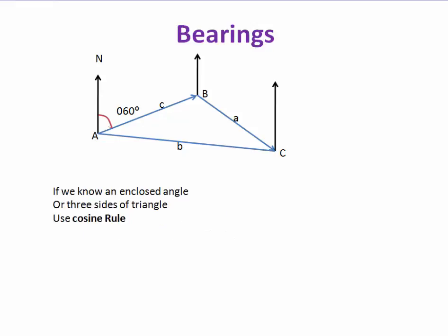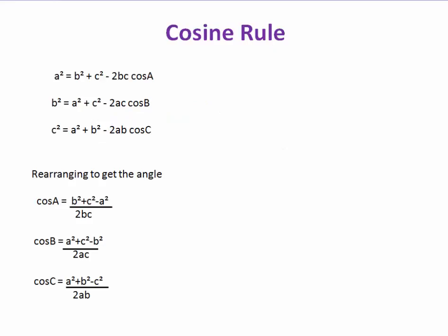If we know an enclosed angle — that's an angle between two known sides — or we know all three sides of the triangle, then we use the cosine rule to find angles and sides. The cosine rule is: b squared equals a squared plus c squared minus 2ac cos B. An important memory tip: whichever side is squared on the left of the equals sign, the corresponding cosine appears on the right.